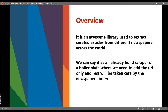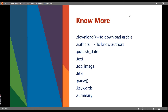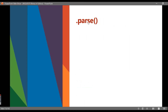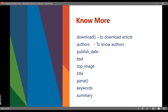This library returns an object data type, and we need to see what it will return. The first function is 'download' — we use this to download an article. For example, if we have an HTML page, the first step is to download that article. Then we use the 'parse' function — now that the article is downloaded, we parse it as HTML so that we can make the article more readable.